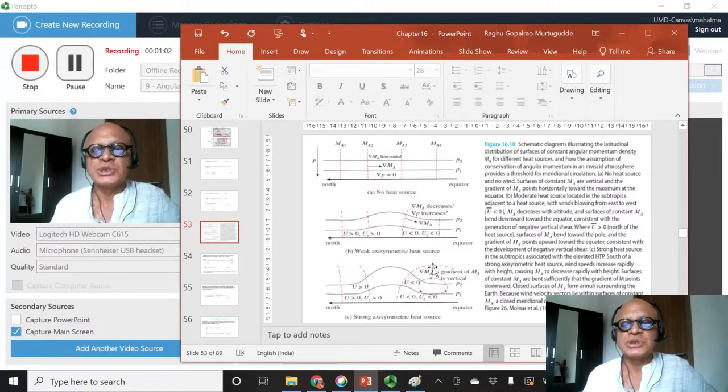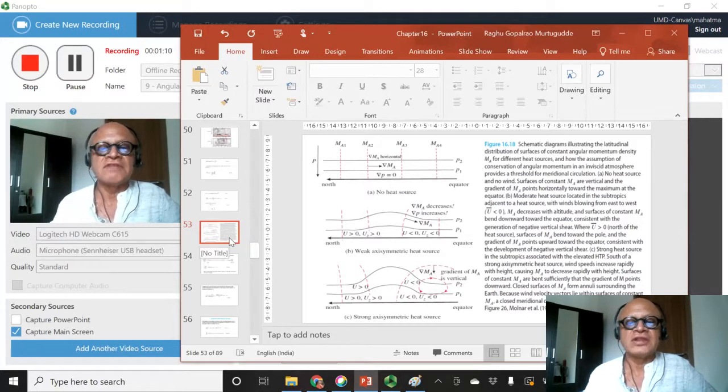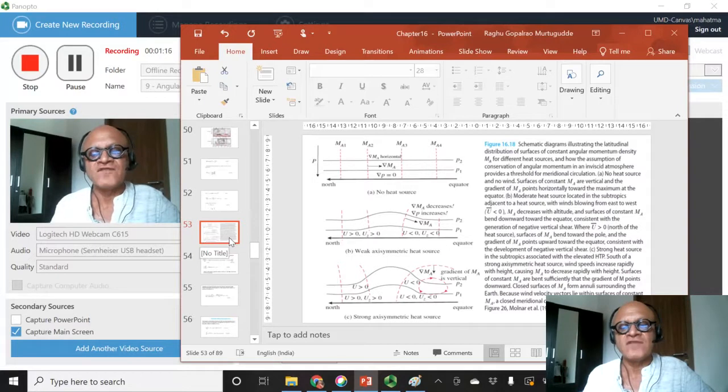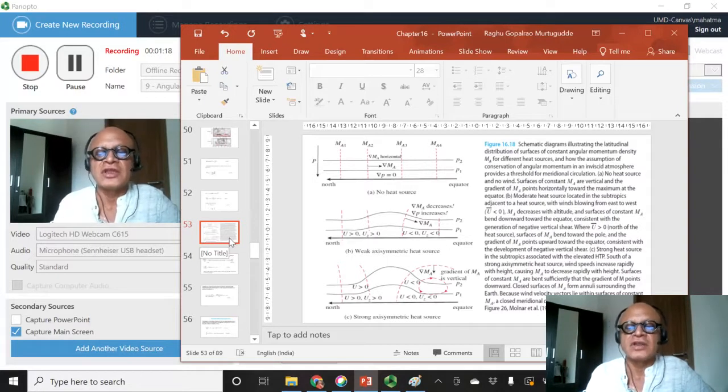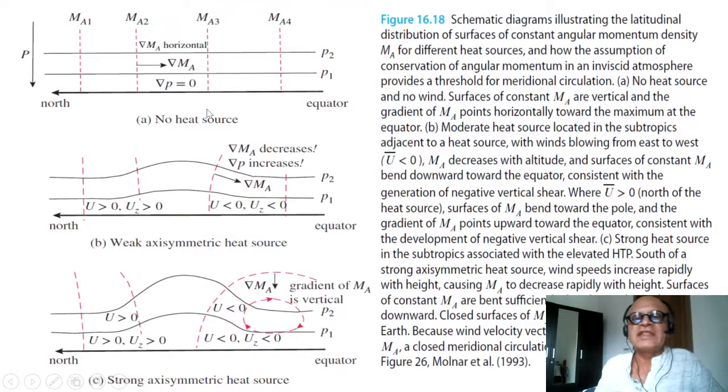There are many such arguments made, and we'll see later that there's some argument saying that Tibetan plateau heating is not even necessary for driving monsoonal circulation, but we will stick with this for consistency with the book. Let me go through this key figure.